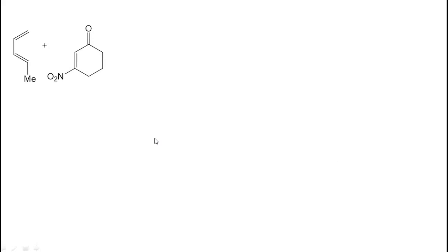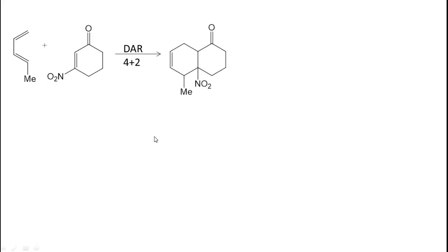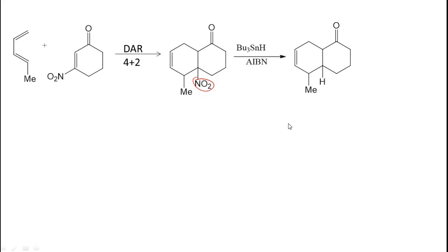Next, we will take this reactant. The diene and dienophile undergo a Diels-Alder reaction — that is a 4+2 cyclisation — giving the product. This product on treatment with Bu3SnH, tributyltinhydride, in presence of AIBN: the nitro group will be replaced to give the product.